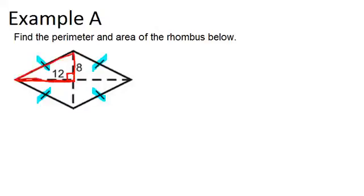Because we're not given the side length, but it is a right triangle, we can use the Pythagorean theorem to solve for our side length of the rhombus. So that would be 12 squared plus 8 squared equals S squared. That gives us 144 plus 64 equals S squared.